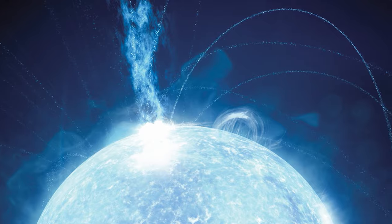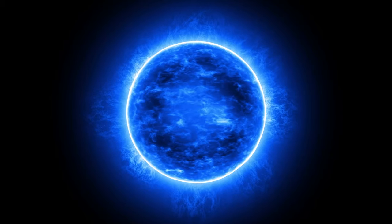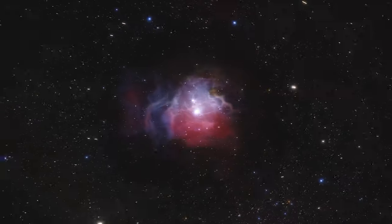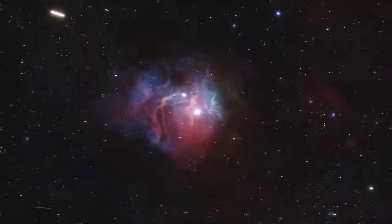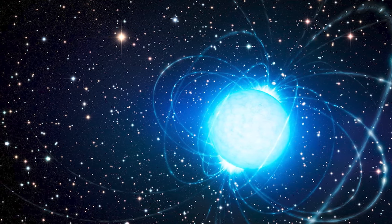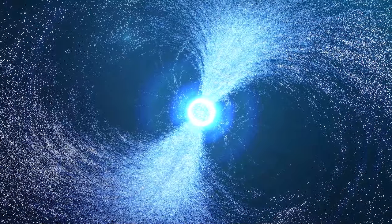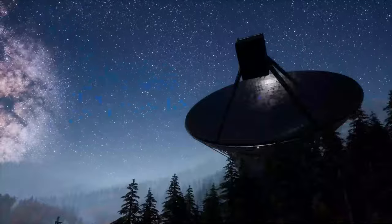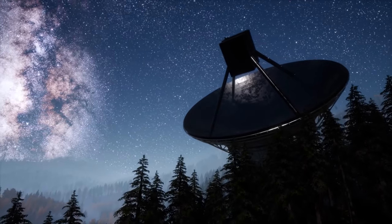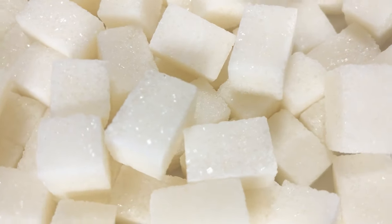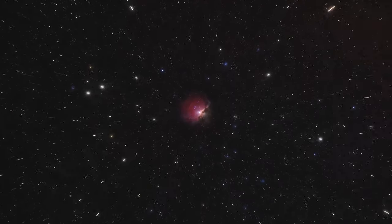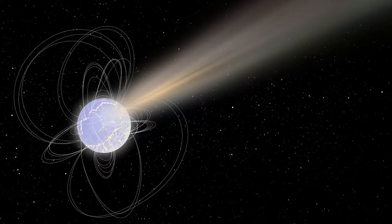Magnetars are some of the universe's most extreme objects. Essentially, they're a type of neutron star, remnants left after massive stars explode in spectacular supernovae. While all neutron stars are incredibly dense and possess strong magnetic fields, magnetars crank up the intensity to levels almost difficult to fathom. A teaspoon of material from a magnetar would weigh about a billion tons on Earth. Picture the entire human population condensed into a sugar cube, and you're starting to get a grasp of the staggering density of these objects.